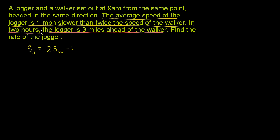And then they say: in two hours, the jogger is 3 miles ahead of the walker. So if we go two hours into the future, the second statement is: the jogger is 3 miles ahead of the walker. We could say the distance that the jogger has traveled is 3 miles more than the distance of the walker — it is equal to the distance of the walker plus 3. This is how far the jogger has traveled; he's traveled 3 miles more than the walker.